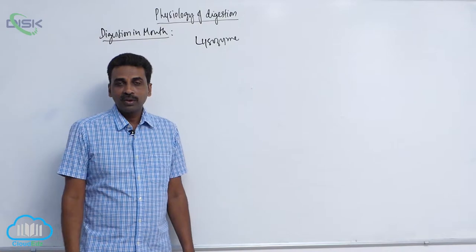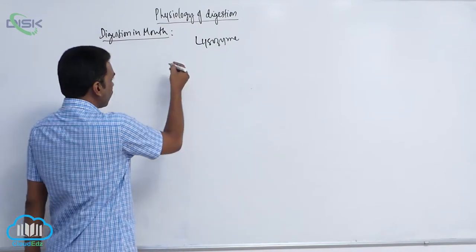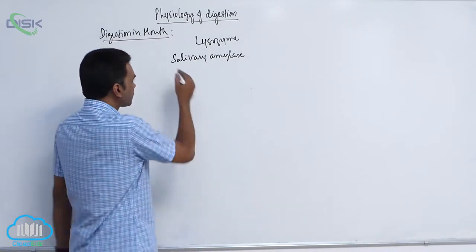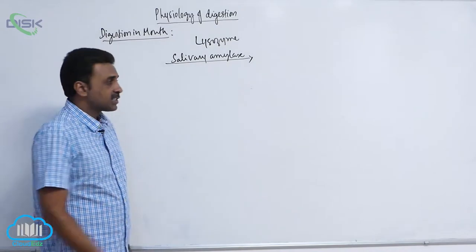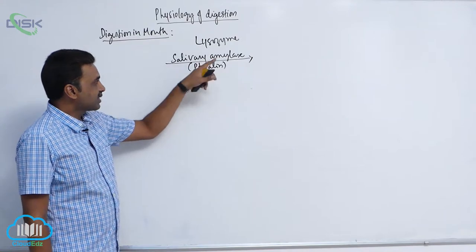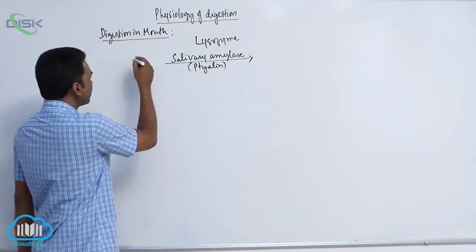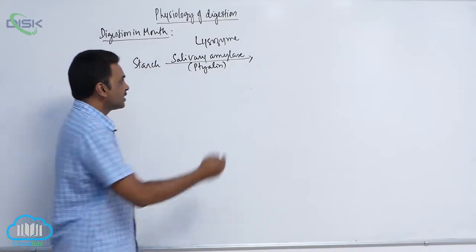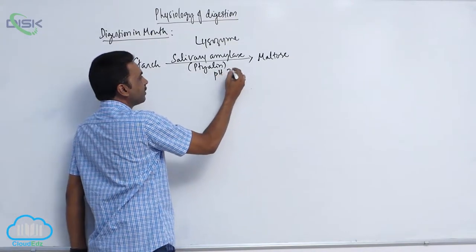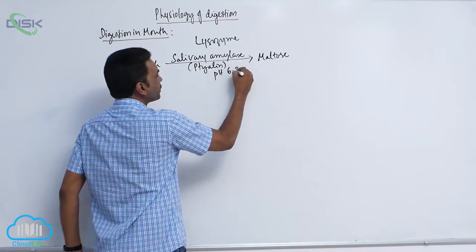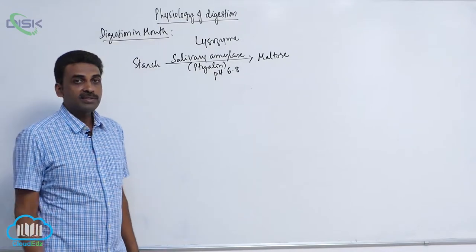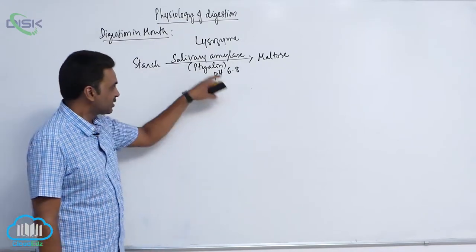There is only one enzyme in saliva: Salivary Amylase, previously called Ptyalin. All amylases act on carbohydrates. The carbohydrate we generally take is starch. Salivary amylase converts starch into maltose — a disaccharide. This happens at pH 6.8. Pancreatic amylase works above pH 7, in alkaline medium, while salivary amylase works in slightly acidic medium.